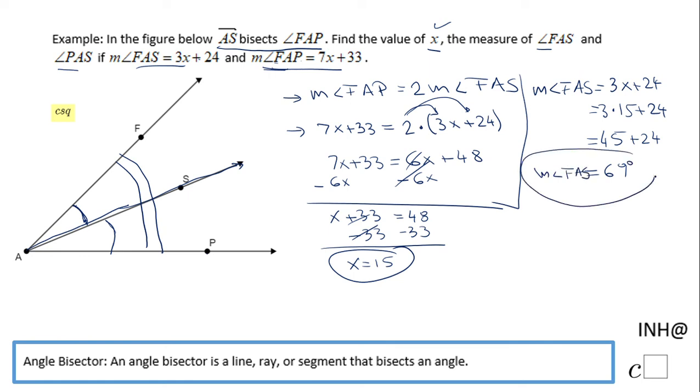We have to find one more angle, which is the measure of angle PAS. The measure of angle PAS is the same as the measure of angle FAS because these two angles are congruent—AS is the angle bisector. So the measure of angle PAS is 69 degrees.